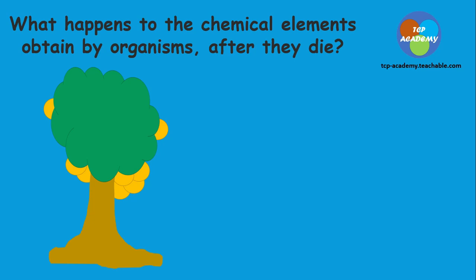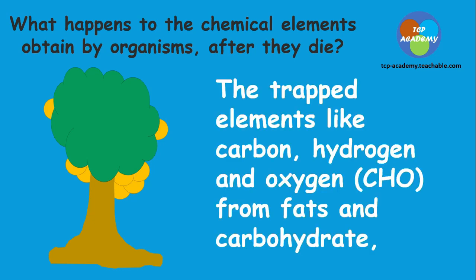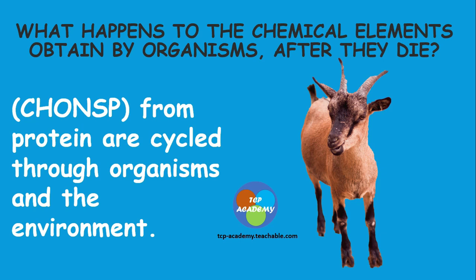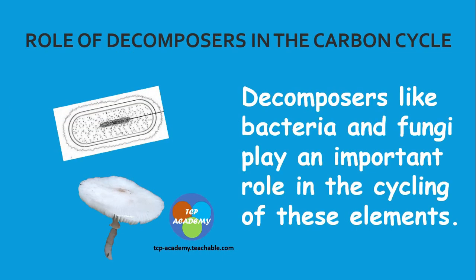What happens to chemical elements obtained by organisms after they die? These elements include the trapped elements like carbon, hydrogen, or oxygen from fats and carbohydrates. CHONSP from protein are cycled through organisms and the environment. Decomposers like bacteria and fungi play an important role in the cycling of elements in nature. When an organism dies, it is acted upon by detritivores and eventually decomposes, and through the process of respiration, carbon dioxide is released into the atmosphere.